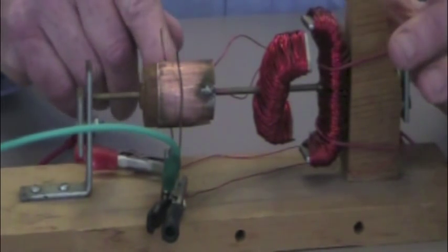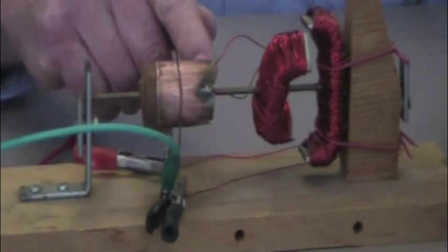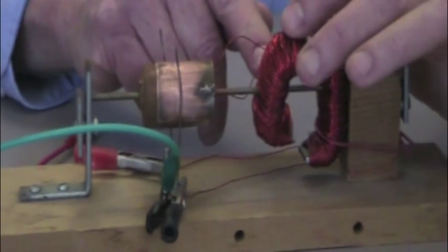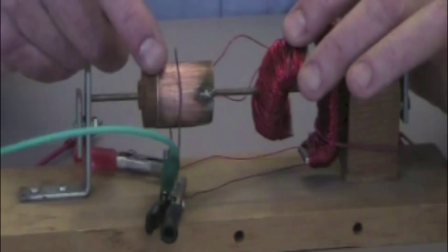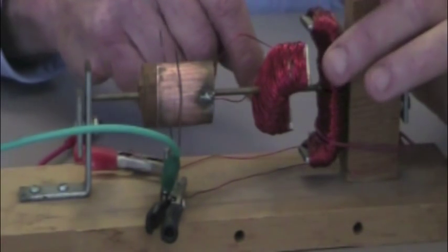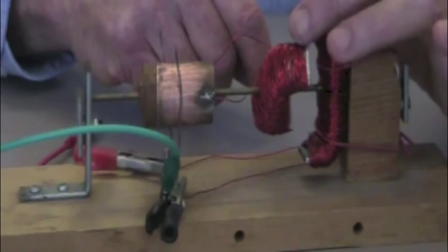And so the electricity, for instance, goes in from here, goes through this electromagnet, comes out this side, and goes to the other side of the dry cell as the armature rotates.